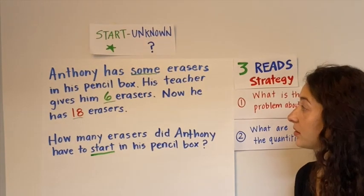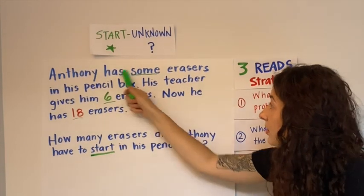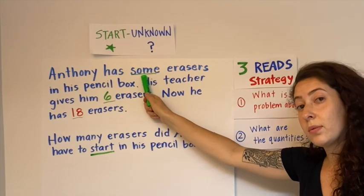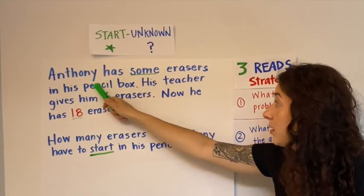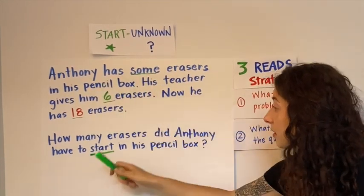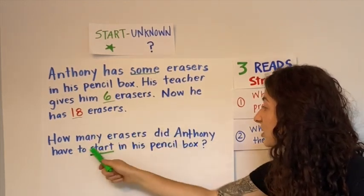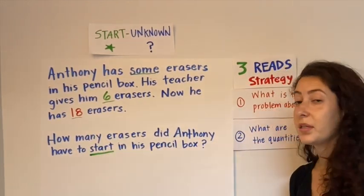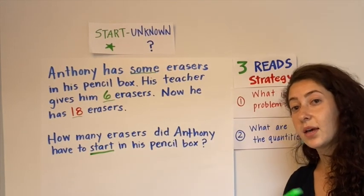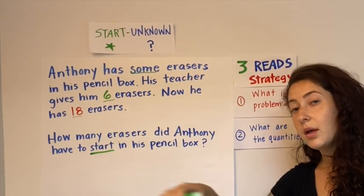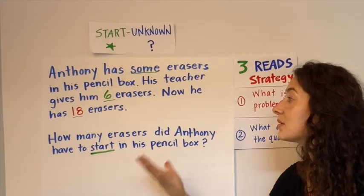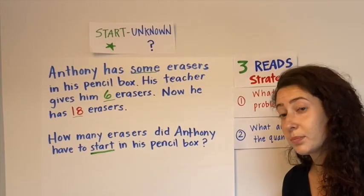And as you can see, the quantity some is a quantity that we do not know. He has some erasers in his pencil box. We want to know how many erasers Anthony start with in his pencil box. So my next step is I want to write a horizontal equation to help me see what I would have to figure out for this problem.